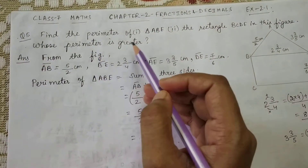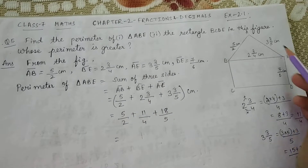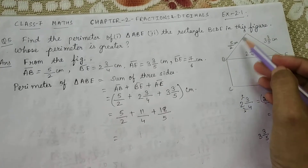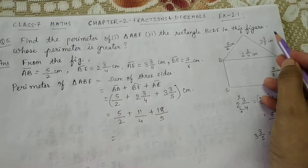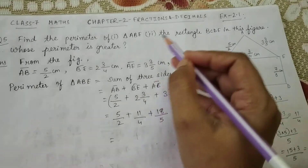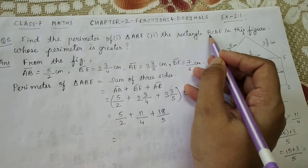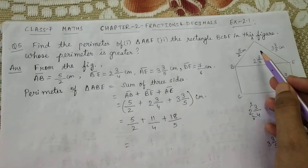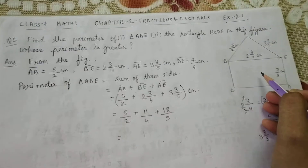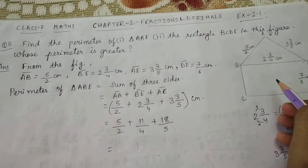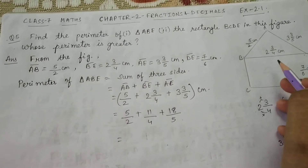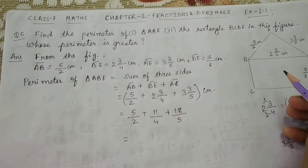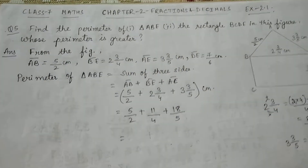Question number 5: Find the perimeter of triangle ABE as shown in the figure. We have to find the perimeter of this triangle ABE, where the side lengths are given in fraction form. We also need to find the perimeter of rectangle BCDE, and then compare whose perimeter is greater. In my previous video I showed you an example of how to compare two fractions — you will need to use that here.